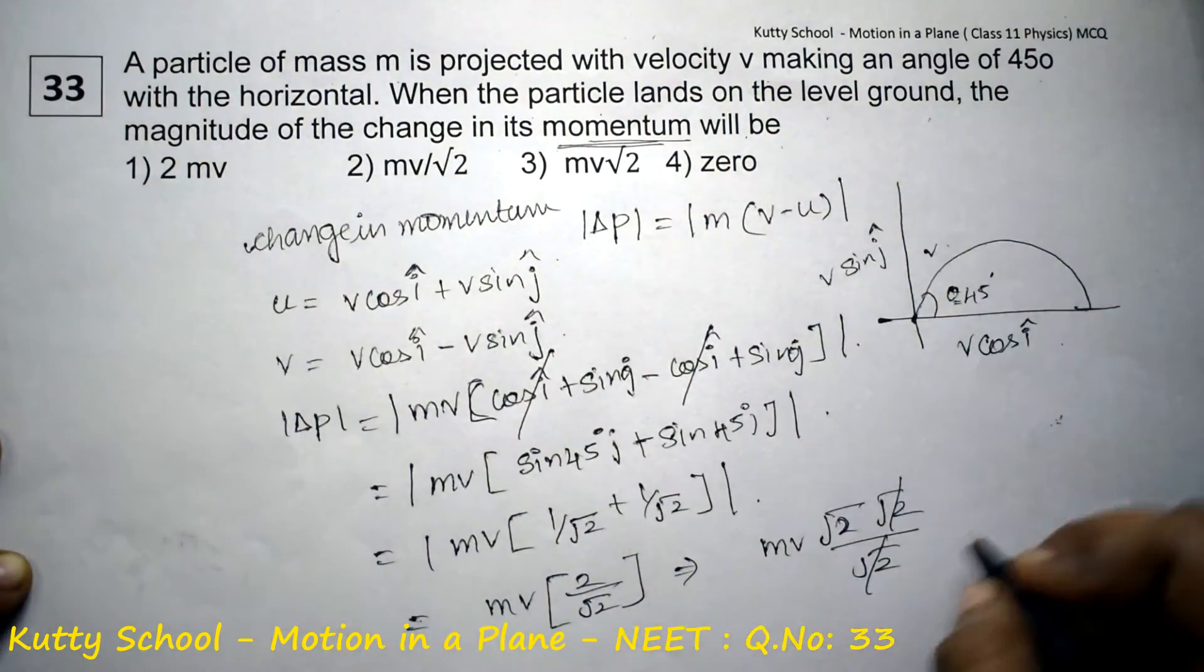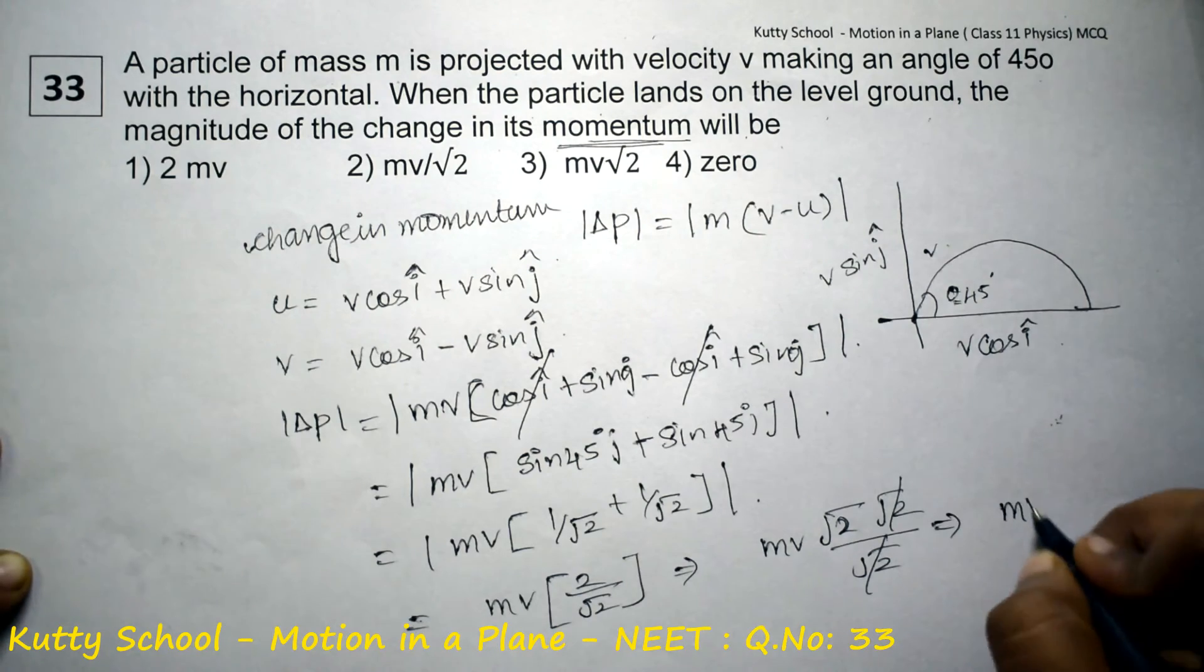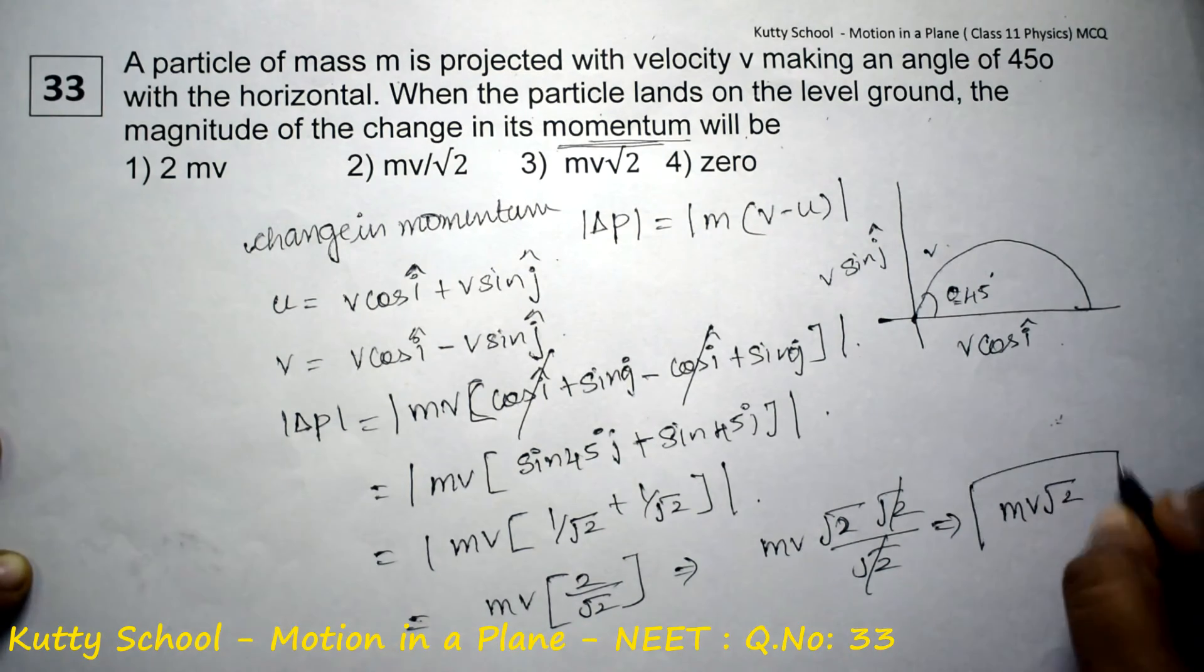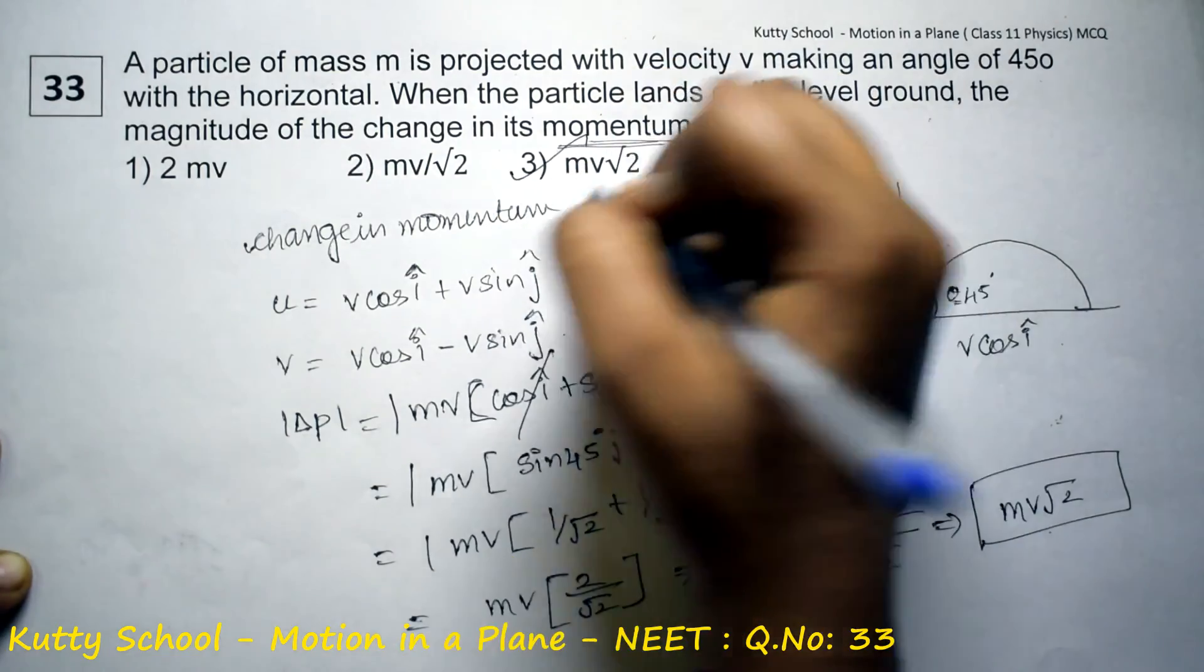Rationalizing: mv into root 2 into root 2 by root 2. Root 2 cancels, so the answer equals mv into root 2.